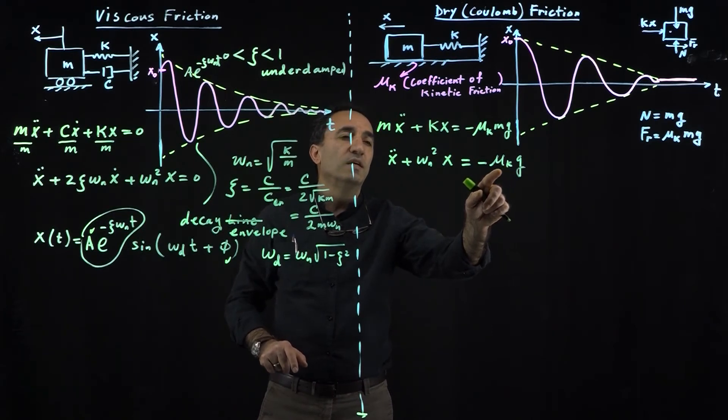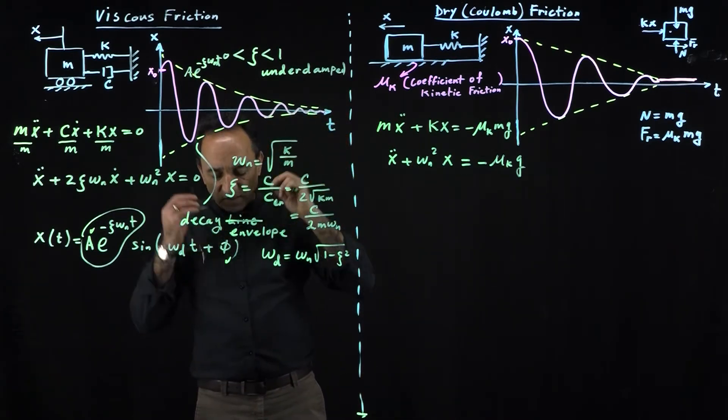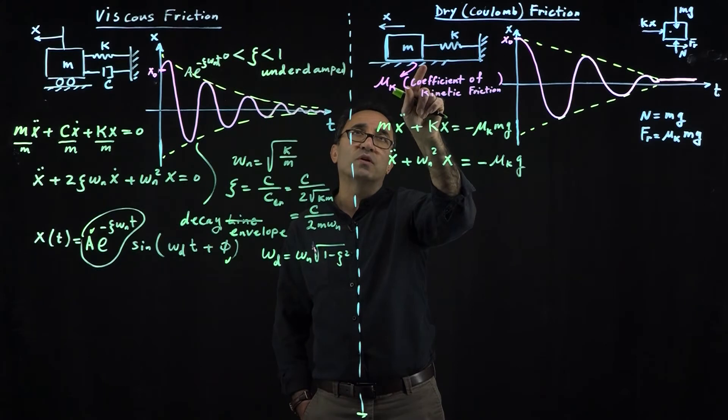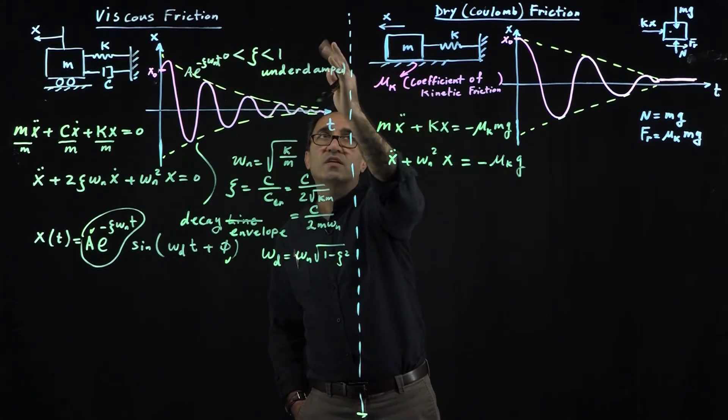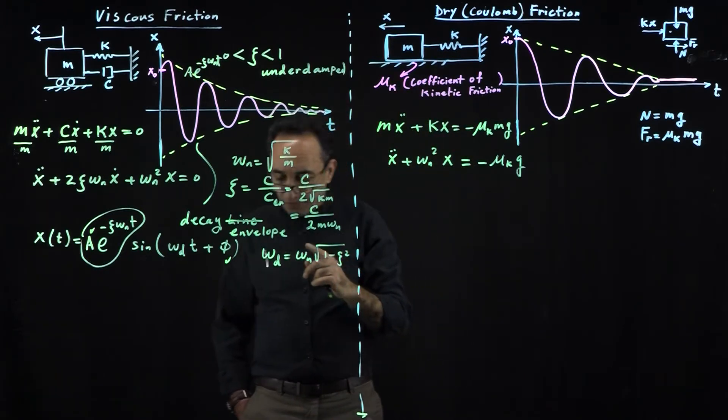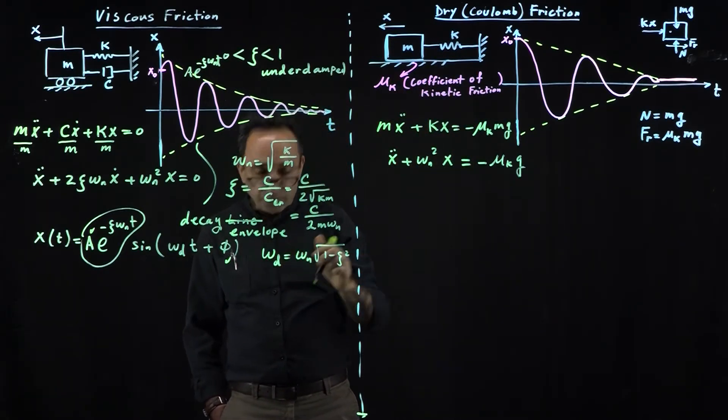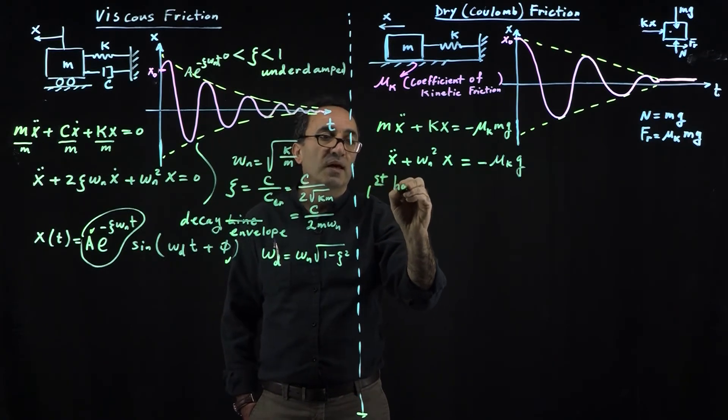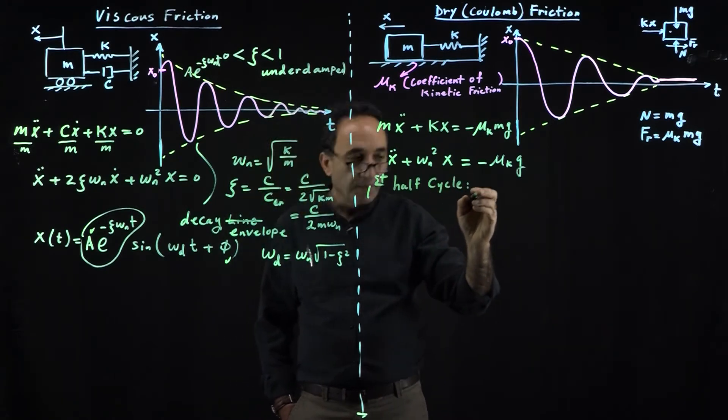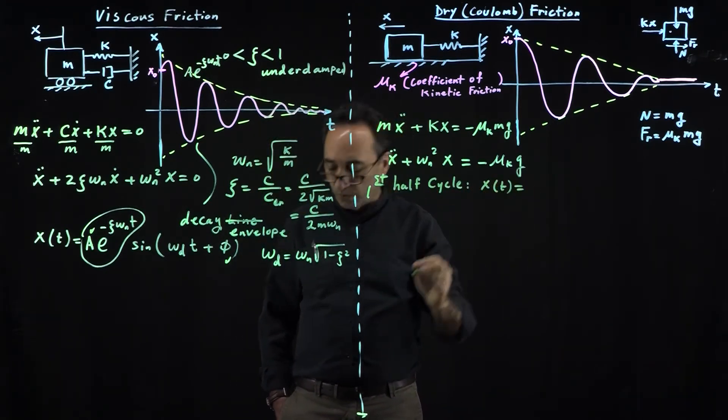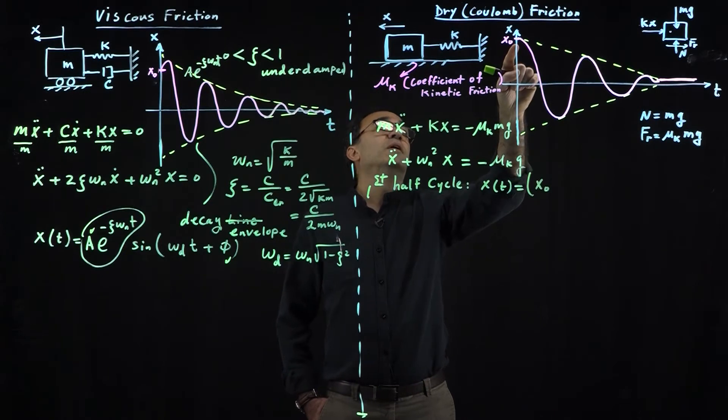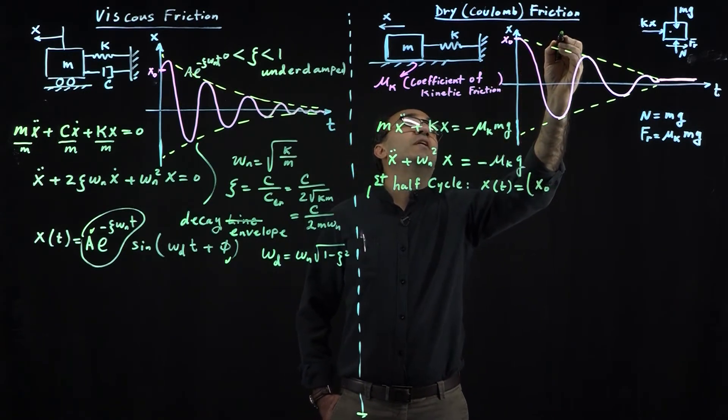The solution to this system—you have to understand that as the mass moves to the left, friction is moving to the right. When you go through half a cycle, friction is moving to the right. When this stops and moves the other way, friction will switch direction. Therefore, the solution for the first half cycle is as follows.